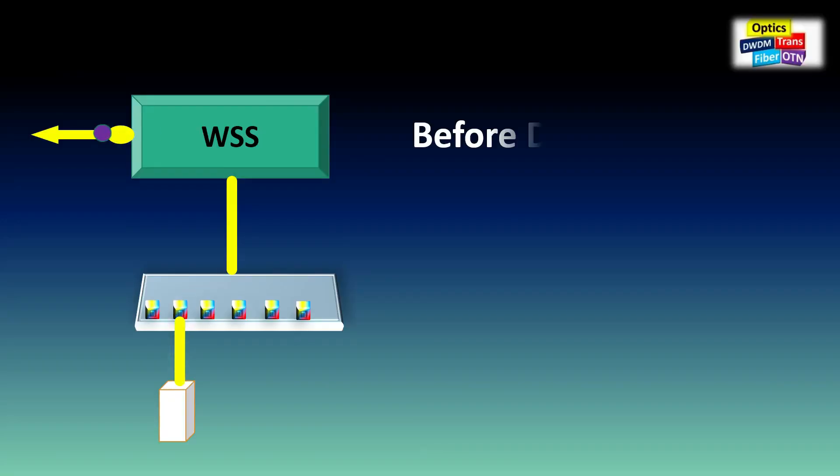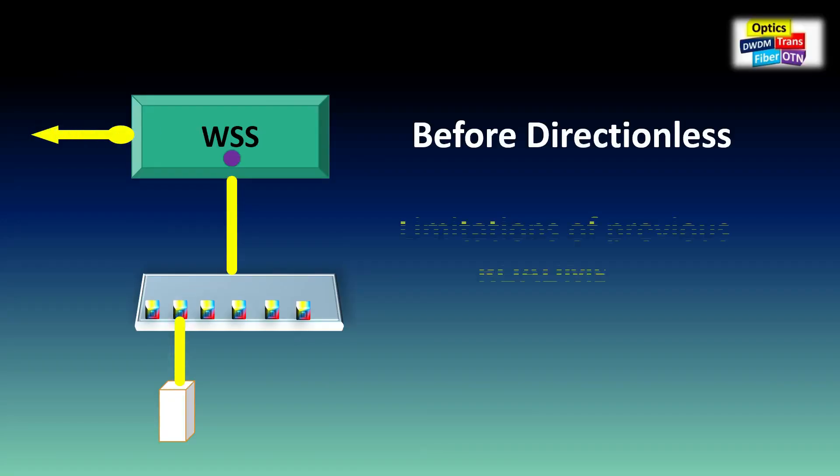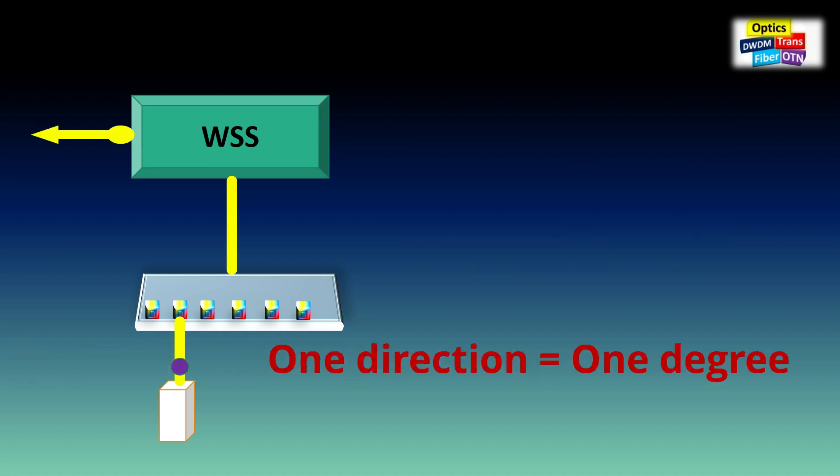Directionless. But before directionless, let's see what are the limitations of previous ROADM. Original ROADM technology dedicated an add-drop complex for each ROADM degree. One degree is equivalent to one fiber-linked direction. One direction equals one degree.